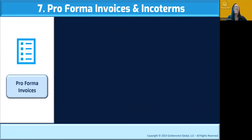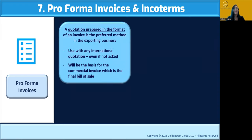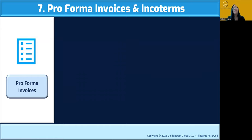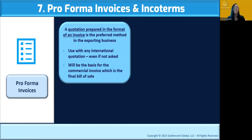Topic 7: Pro forma invoices and Incoterms. Let's say your efforts paid off — your market research worked, your export plan worked, you adjusted your product, priced it right, and you have a buyer. Now it's time to put it on paper. Usually the first step when exporting is the pro forma invoice — a quotation prepared in the format of an invoice, which is the preferred method in the export business. You can use this for any international quotation even when it's not explicitly asked for.